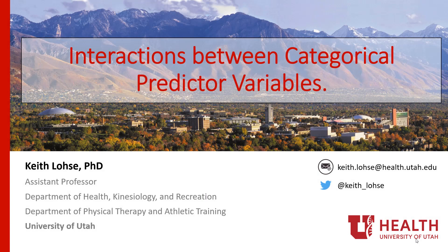Hi everyone, welcome to the second video for module 9 of CNES 7103. In today's video we want to talk about interactions between our categorical predictor variables and really understand the difference between the main effect of one variable and an interaction. We're going to be spending more time talking about more complicated designs when we're building these factorial ANOVAs, but in this video I just want to break it down to a simple case where we have a two-by-two design, thinking about this at a more conceptual level before we jump into the computational aspects of how these contrast codes work.